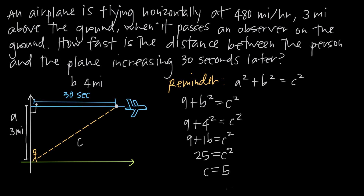So 30 seconds after the plane passes the observer, when it's 4 miles away horizontally, the direct distance between the person and the plane is 5 miles at that particular point. But remember, we've been asked how fast is the distance between the person and the plane increasing — in other words, how fast is C changing? We found the specific value for C 30 seconds later, but we want to know how fast C is changing at that point, not what the value of C is. So we need to use implicit differentiation.